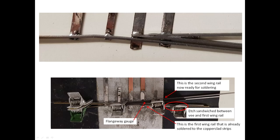Position the second wing rail, clip it to the jig, insert the flangeway gauge and clip it in position as shown. Again, check that everything is pressed down firmly against the jig and that the knuckles on the two wing rails are lined up. Solder the second wing rail to the copper clad strips.